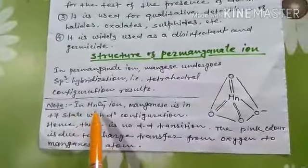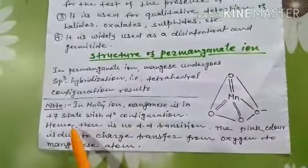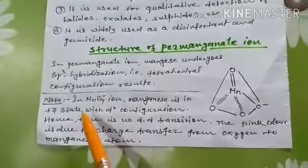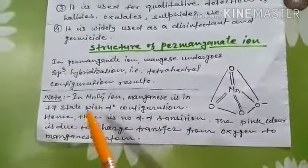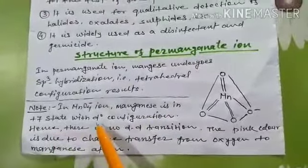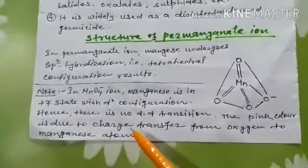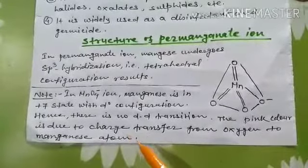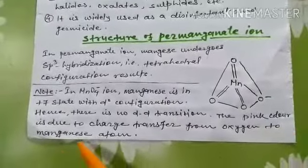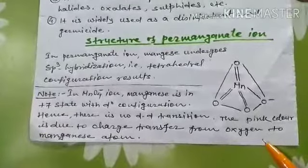An important note about potassium permanganate: In the permanganate ion, manganese is in the +7 oxidation state with a d⁰ configuration. Hence, there is no d-d transition. The pink color of potassium permanganate is due to charge transfer from oxygen to the manganese atom.